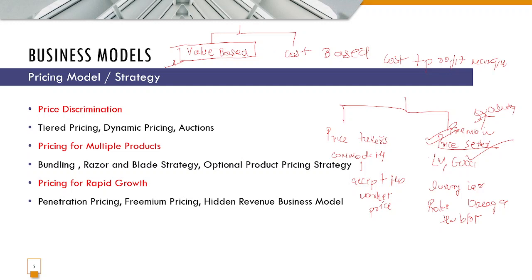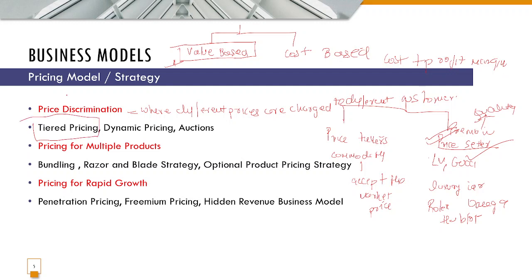There are also pricing strategies based on price discrimination, where different prices are charged to different customers. First is tiered pricing, where different prices are charged based on volume — those who purchase in bulk get discounts, while those who purchase in small quantities do not. This is the usual practice: those who purchase a lot get some discount, while small-quantity buyers don't get much discount.